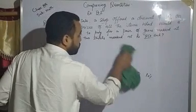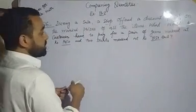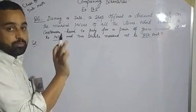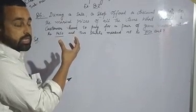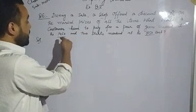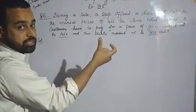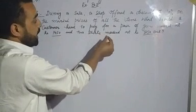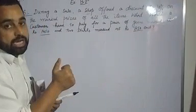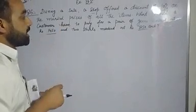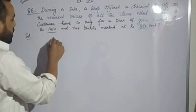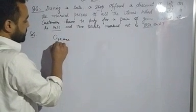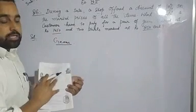The customer bought two items: one pair of jeans with market price 1450 rupees, and two shirts at 850 rupees each. Let's calculate one by one. First, the pair of jeans - cost price or market price is 1450 rupees.